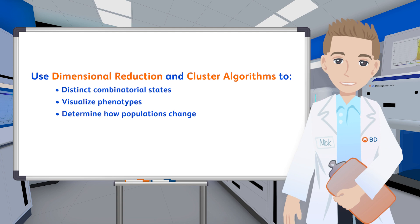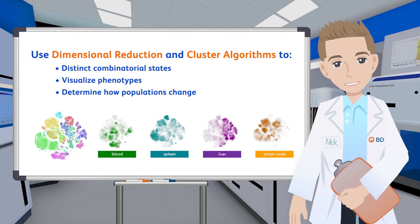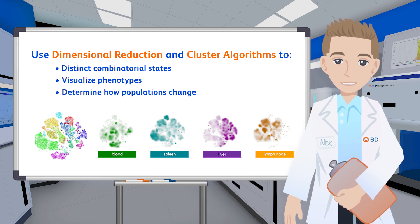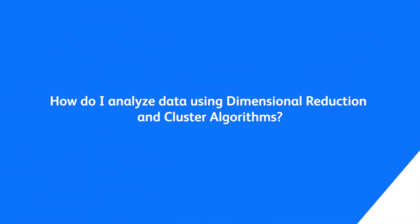The use of dimensional reduction and clustering algorithms offers a non-biased and objective summary of distinct combinatorial states where phenotypes can be visualized and how populations change can be determined. So how do we analyze data using dimensional reduction and clustering algorithms?